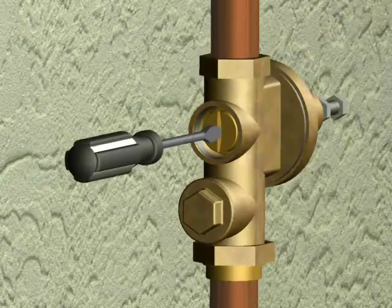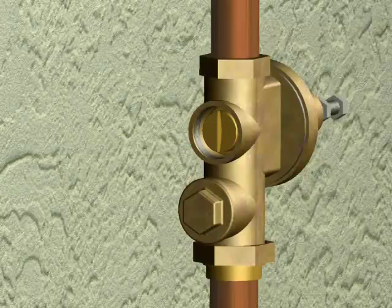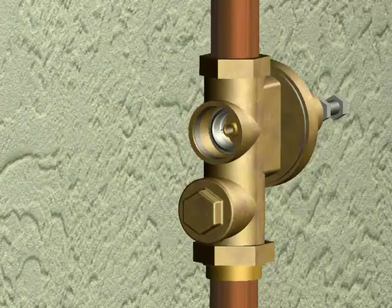Loosen the plunger by turning counterclockwise. Remove the plunger, the seal ring, and the metal washer.